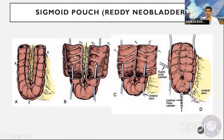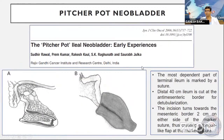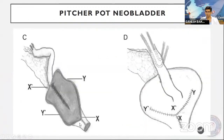Ileocolonic pouch: ascending colon and cecum are used, rolled into a spherical shape, and ureters are brought in using a non-refluxing technique easier through the colon. Sigmoid pouch neobladder: sigmoid segment used, ureteral stents brought out posteriorly with urethral anastomosis anteriorly. Pitcher pot neobladder, described by Dr. Rawal at RGCI: the most dependent part of the terminal ileum is marked with a suture; distal 40 cm of ileum is cut at the anti-mesenteric border for detubularization; an incision turns toward the mesenteric border 2 cm on either side of the marked suture, creating a tongue-like flap that is developed into a tube anastomosed to the urethra, and the remainder is folded into a sphere with a chimney for the two ureters.